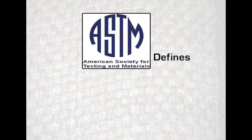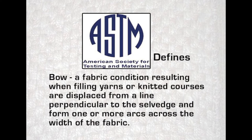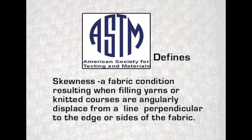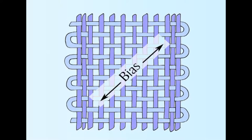ASTM has defined bow and skewness. According to them, bow is a fabric condition that results when filling yarns or knitted courses are displaced from a line perpendicular to the edge of the fabric. Skewness is a condition resulting when the filling yarn or a knitted course is angularly displaced from a line perpendicular to the edge or sides of the fabric. Skewness is also called bias, and both defects occur because yarns are not at right angles to each other.